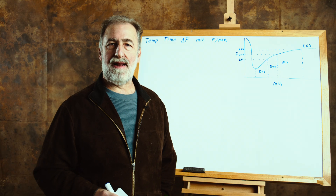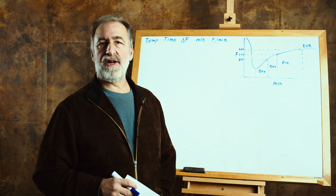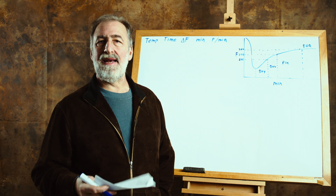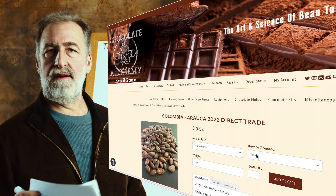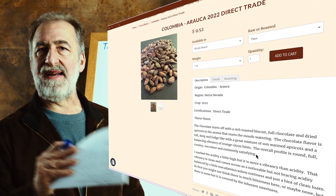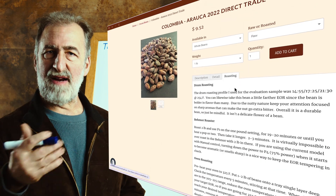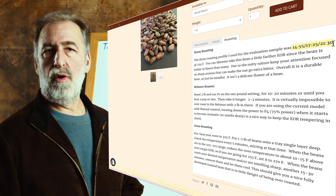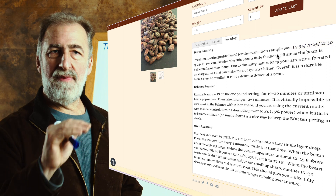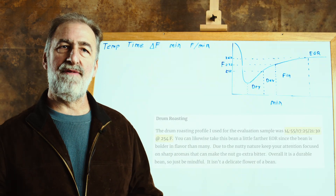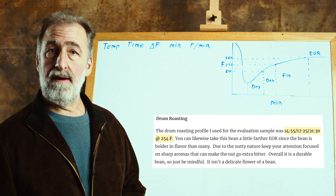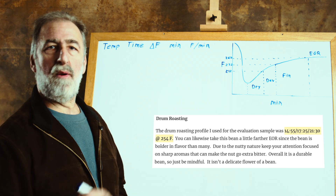Hey everyone. I'm John Nancy with Chocolate Alchemy. Today I want to go over roasting profile notation. You're going to come across these anytime you're on my website looking at how to roast a cocoa bean. Whenever you're on our store, there's a breakout tab that shows roasting recommendations — whether that's in a drum roaster, the Beemore, or even your oven, you may see some variation of a string of numbers, and that's what I want to go over today.